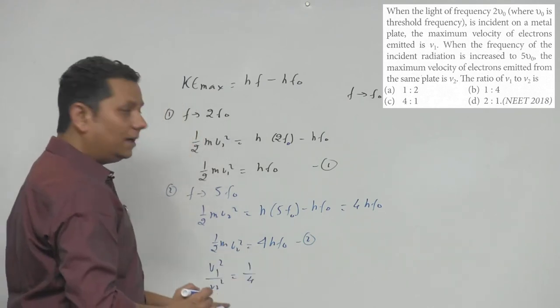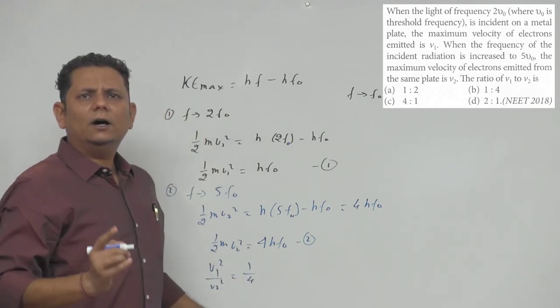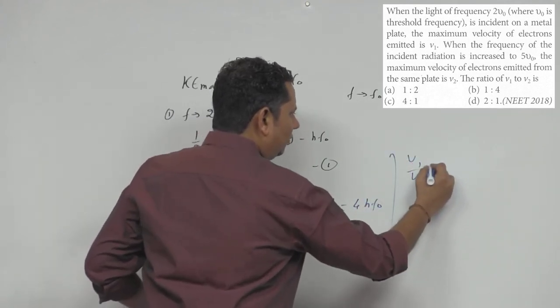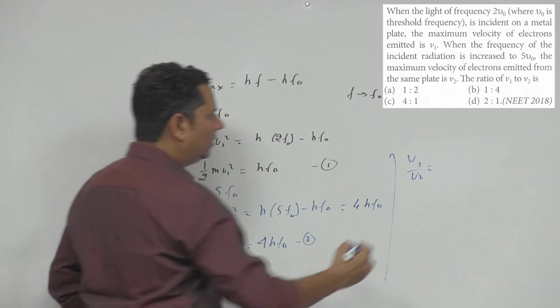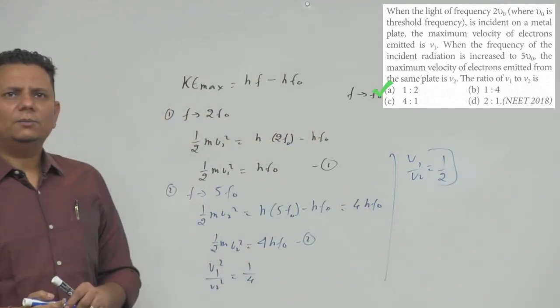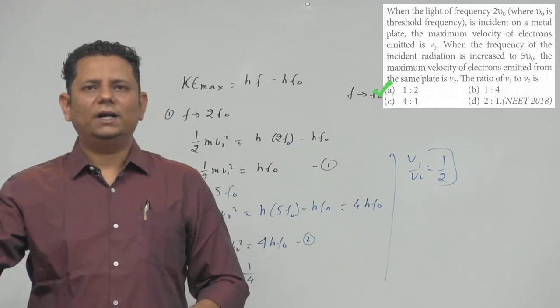We need to find the ratio of V₁ to V₂. You can write V₁ squared over V₂ squared. Taking the square root, that will be equal to 1 by 2.